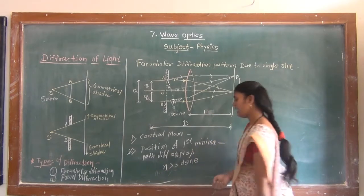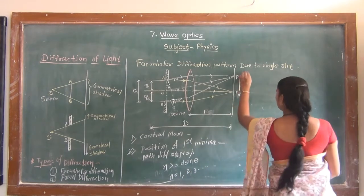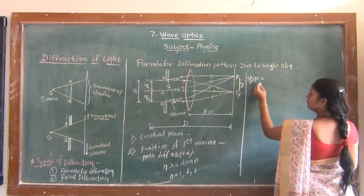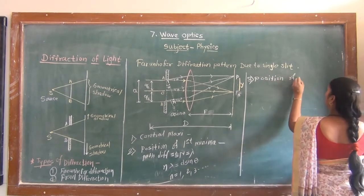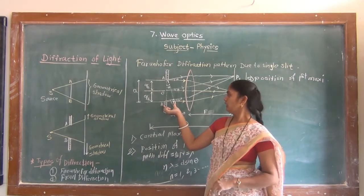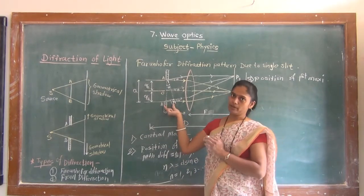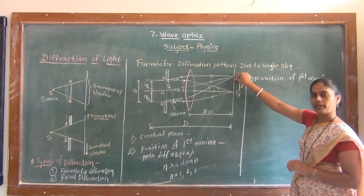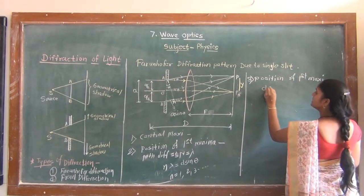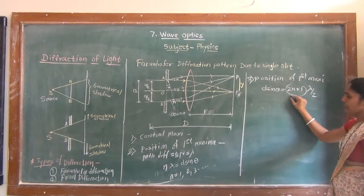The general equation for minima is: N·lambda = d·sinθ, where N = 1, 2, 3, etc. Now the position of the first maxima — the third point. Suppose the path BN is an odd multiple of lambda/2, that is, d·sinθ equals an odd multiple of lambda/2. Then point P will be a bright point or the first maxima. So we write: d·sinθ = (2N + 1)·lambda/2.